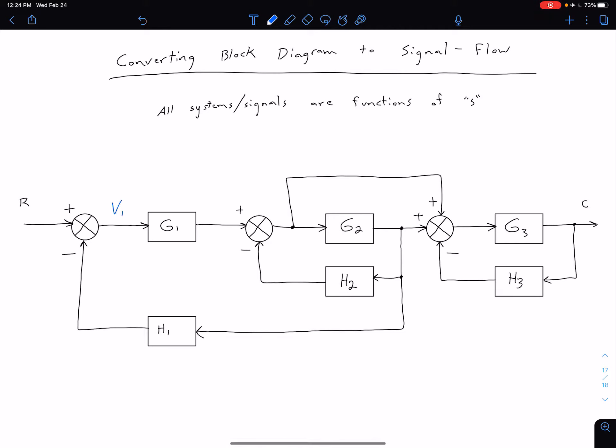So for instance, we can call this signal here between our first summing junction and G1, our signal V1. On the other side of G1, we now have a different signal, which we can call V2. On the other side of that summing junction, we have a signal V3.